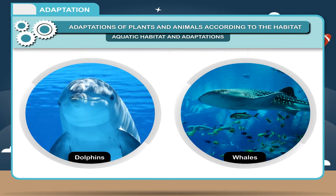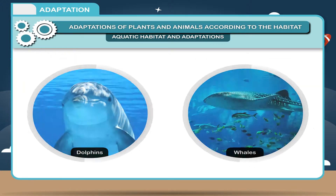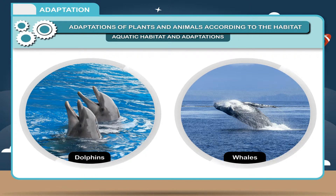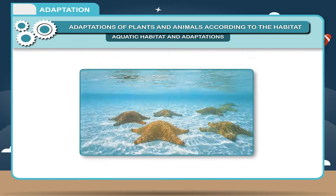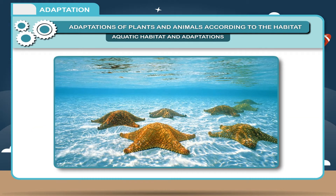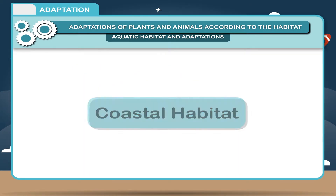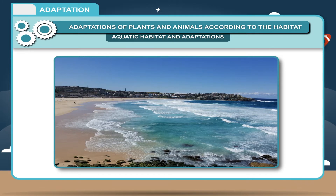There are some sea animals like dolphins and whales that do not have gills. They breathe in air through nostrils or blowholes that are located on the upper parts of their head. This bears evolutionary significance.